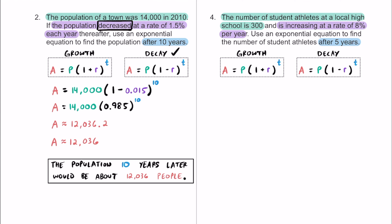We look for a keyword to decide growth or decay — it says the amount of athletes is going up over time, so we're dealing with an exponential growth function, meaning the base of our power has to be greater than one. Making substitutions: A is how many student athletes there will eventually be. P is 300 initial athletes. Then 1 or 100% plus the rate R of 8%, which as a decimal is 0.08 — since 8% is 8 out of 100 — and that's raised to the T power where T equals 5.